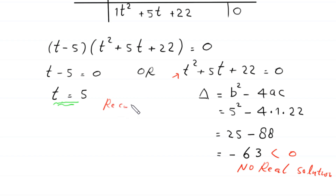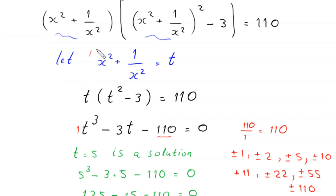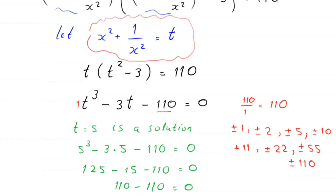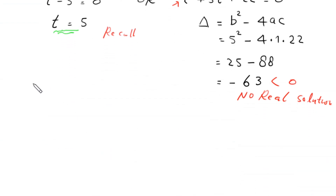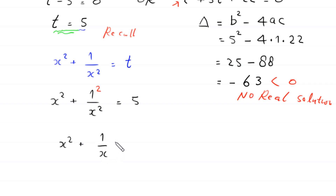Recalling our substitution, x² + 1/x² = t. When t = 5, the equation becomes x² + 1/x² = 5. Since 1 = 1², we can rewrite this as (x²) + (1/x)² = 5.